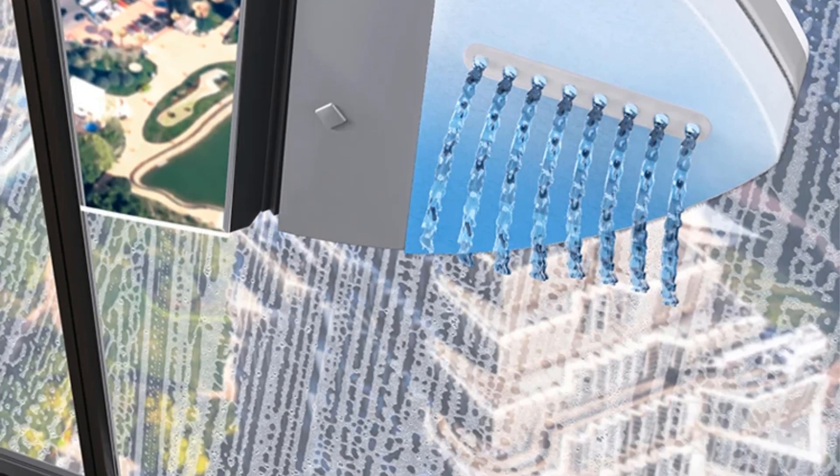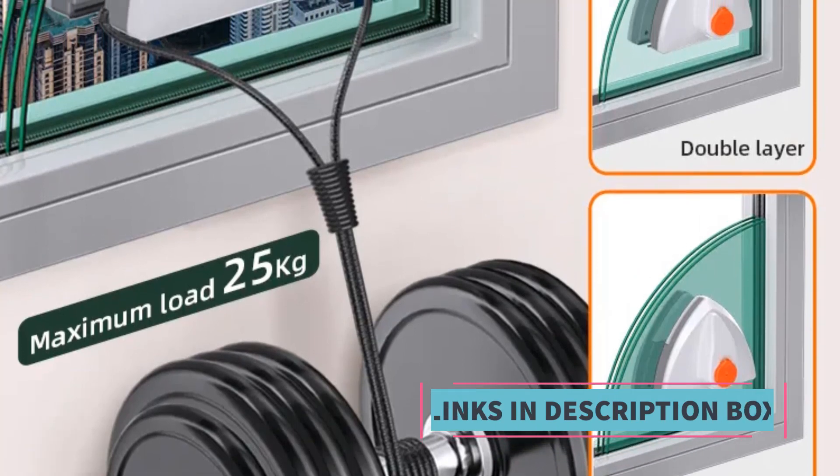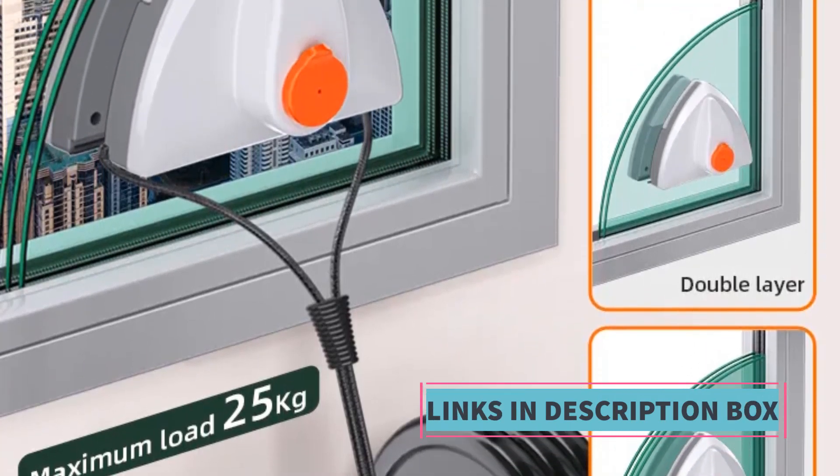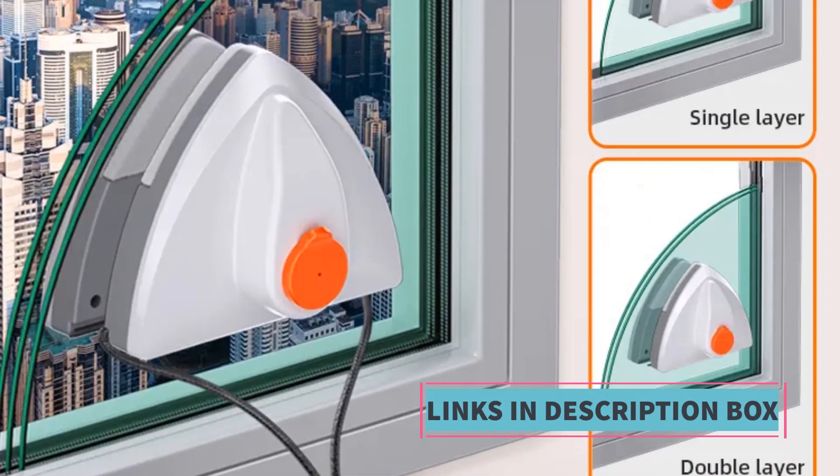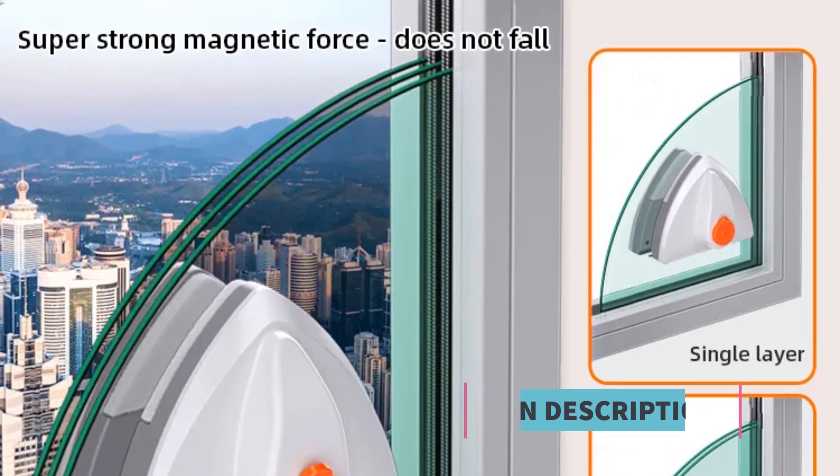Overall, the Magnetic Window Double Side Cleaner offers a practical and efficient solution for home window cleaning. Its magnetic design, adjustable features, and suitability for different glass thicknesses make it a valuable tool for maintaining clear and spotless windows in a household.